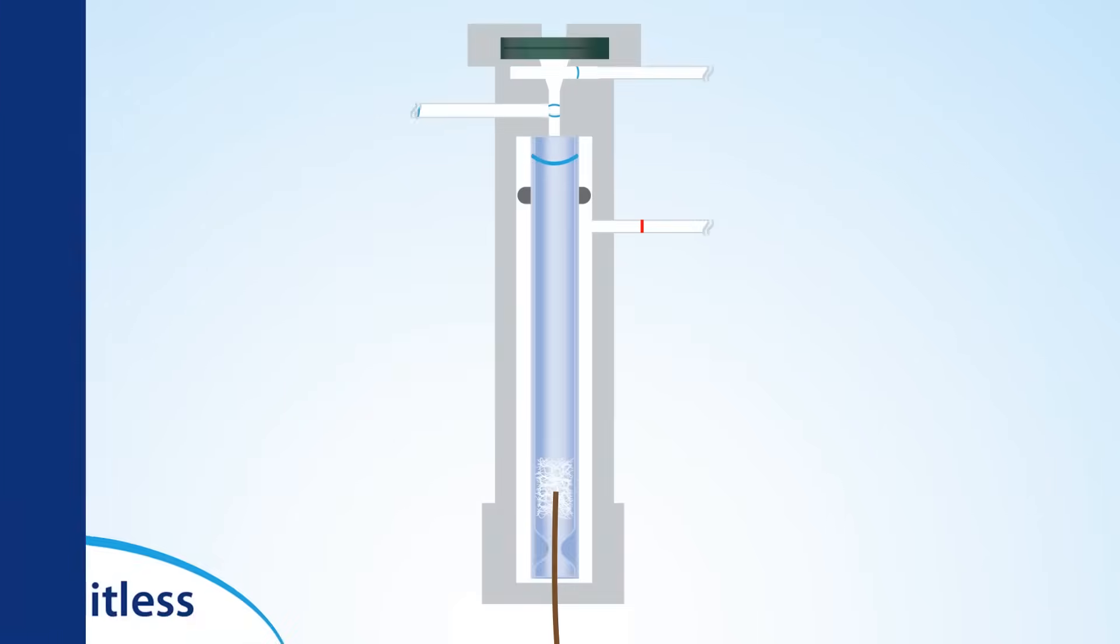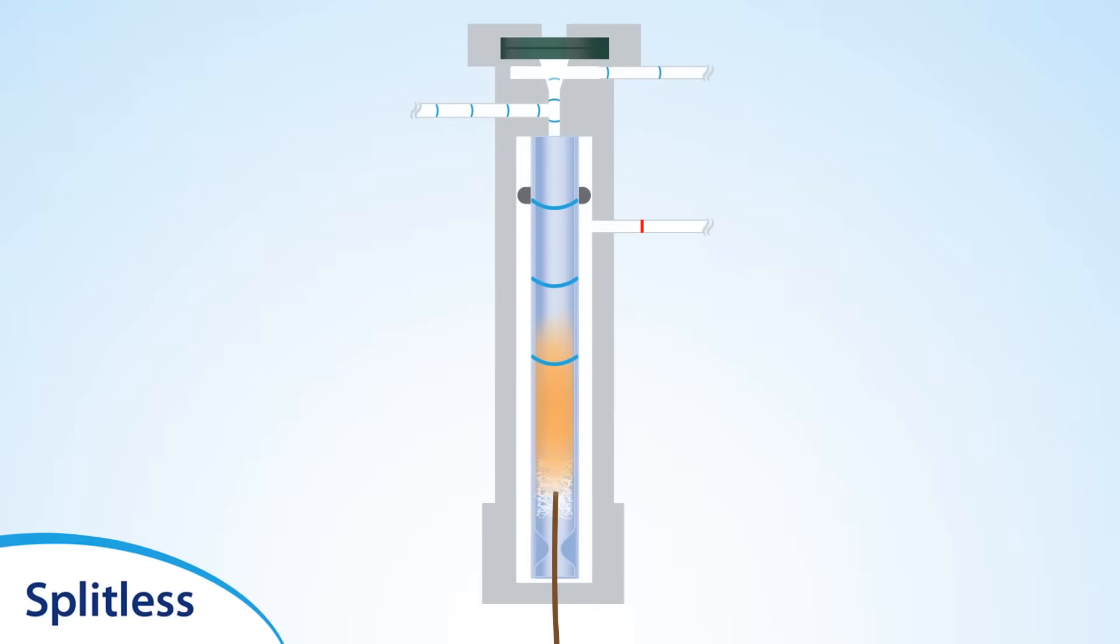Now, let's look at an example of a splitless injection. In a splitless injection, the split vent is closed and left closed before and during the injection.